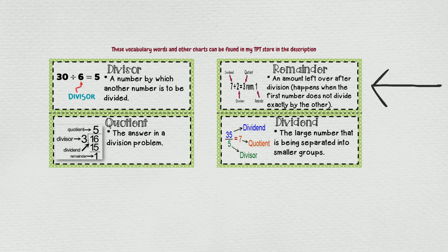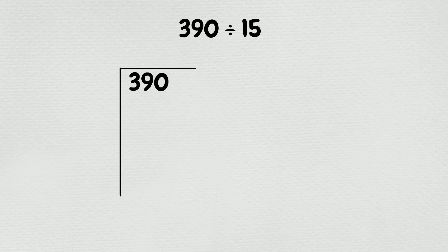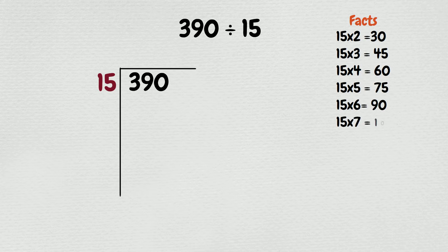Now that we reviewed and understand the vocabulary, let's get started with our first problem. We have 390 divided by 15. We will write out division problems like this. To make dividing easier, you can list the facts for 15 on the side of your paper. The first thing to do is to ask yourself how many times can 15 go into 3?